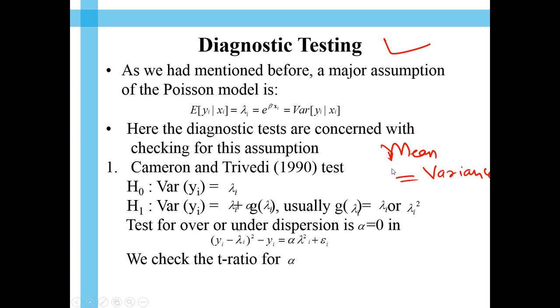That's what is the assumption in Poisson, in the Poisson model. So, that's what we will do as part of diagnostic checking. We'll have the null hypothesis where the variance of yi is lambda i. So, that means, we are trying to see if the mean is equivalent to the variance.